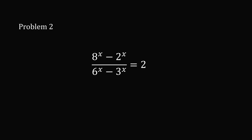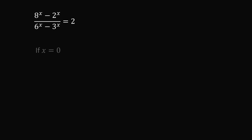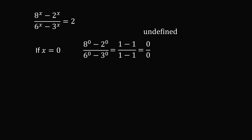Now Problem 2. This is a very different equation, and unfortunately we can't apply the tricks used in Problem 1. First, suppose x equals 0. We'd have 8 to the 0 minus 2 to the 0, over 6 to the 0 minus 3 to the 0, which equals 1 minus 1 over 1 minus 1, giving 0 over 0 — undefined. Therefore, x cannot equal 0.